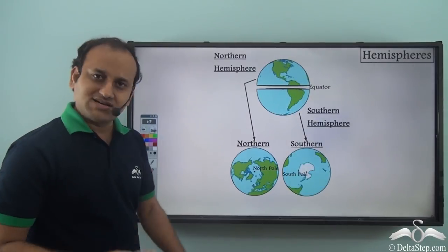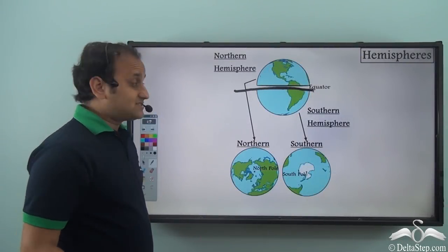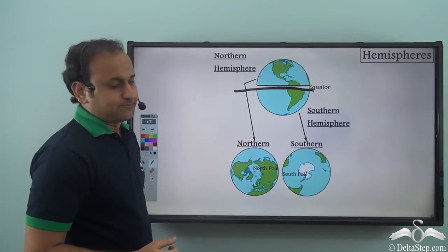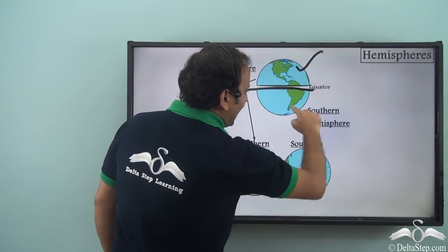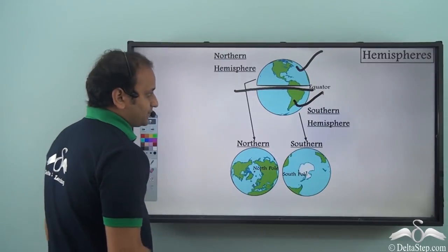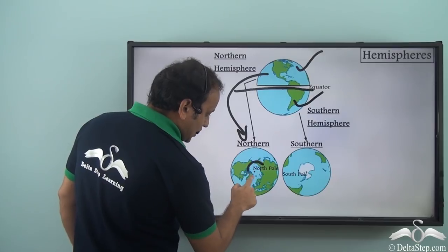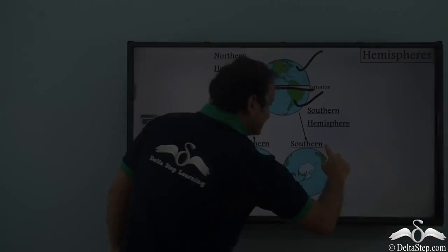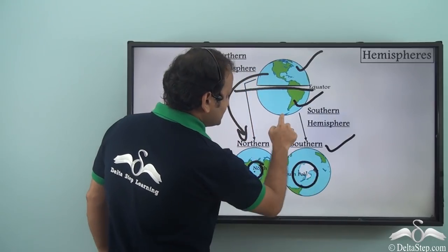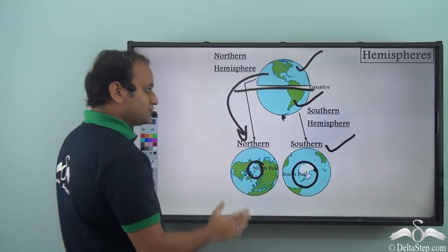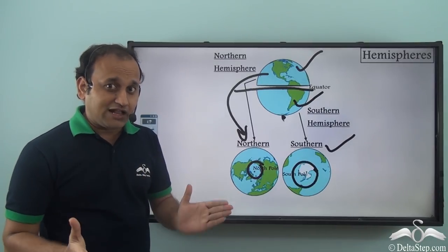The equator divides the earth into two equal halves horizontally, giving us the northern hemisphere and the southern hemisphere. The northern hemisphere is at the top with the north pole, and the southern hemisphere is at the bottom with the south pole.